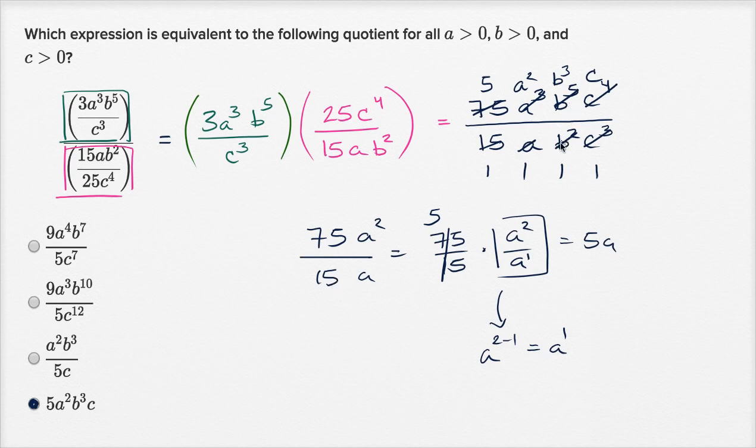Similarly, b to the fifth divided by b squared, that's going to be b to the five minus two power, which is b to the third. c to the fourth divided by c to the third, that's going to be c to the four minus three power, which is c to the first power, which is this choice right here.